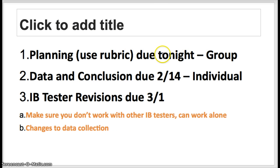Your planning is not due tonight, but it will be due as homework from next class period. Think about the three elements in your lab rubric. You can work on planning as a group, but graphing of data and your conclusion will be individual. If you're an IB tester, all revisions on your rough draft need to be completed and submitted in hard copy — not online — by March 1st. Also make sure that if you're an IB tester, you're not working with other IB testers. You can work alone, but it's not totally necessary as long as you're in charge of the experimental design and making sure your data is valid.